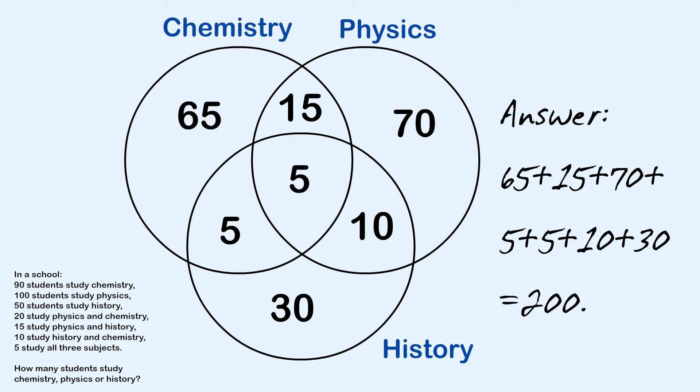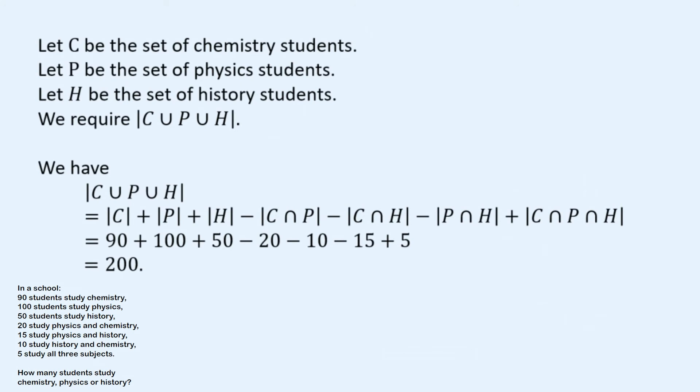So now let's do it algebraically. This time I've got three sets, C, P, and H, and I've actually written here what we require. We require the cardinality of the set which is the union of C, P, and H.